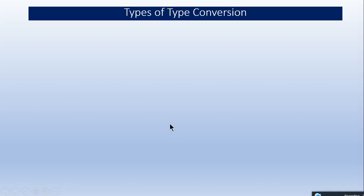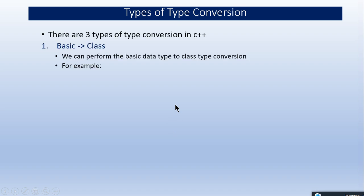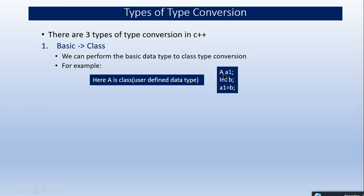So there are three types of type conversion. The first is from basic data type to class data type. Here I've declared a class A, created an object a1 of class A, then declared a basic variable int b, and I'm copying the value of b to the a1 object. So this is a basic to class type conversion.